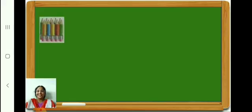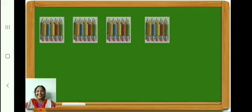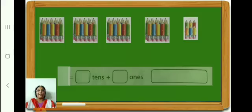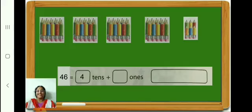Count and see how many pencils in the first box. 10. Second box, 10. Third box, 10. Fourth box, 10. In the fifth box, see properly — there are 6 pencils. In all, how many? 46. 46 is equal to 4 tens plus 6 ones. Write it down. Write number name 46. Very good.